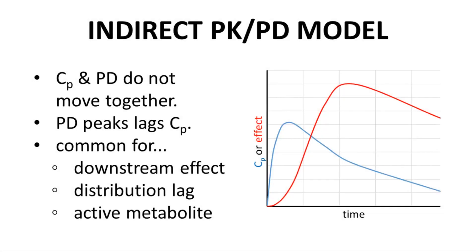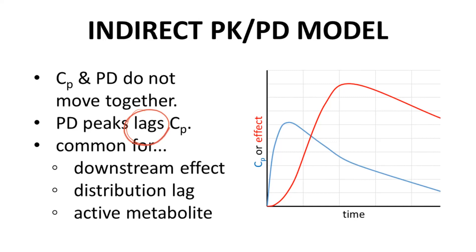In the indirect PKPD model, CP and PD — the effect — do not move together. The peaks of the CP and effect curves do not align on the x-axis. We can see this in the graph to the right. Only after the CP time curve has peaked does the effect time curve achieve its peak, so the PD curve lags behind the CP time curve.